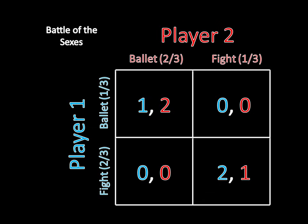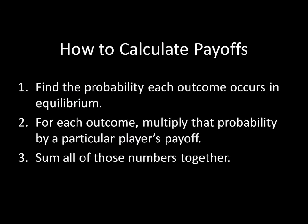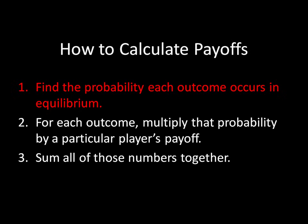The way we're going to calculate payoffs is actually not too bad — it's just a simple algorithm. It requires a few calculations, but once you get the hang of it, it really isn't that hard. The three steps are: first, find the probability of each outcome occurring in equilibrium; then, for each outcome, multiply that probability by a particular player's payoff; and lastly, sum all those numbers together. That's the payoff of that player in the mixed strategy Nash Equilibrium. Let's see this in action with Battle of the Sexes, starting with finding the probability of each outcome occurring.